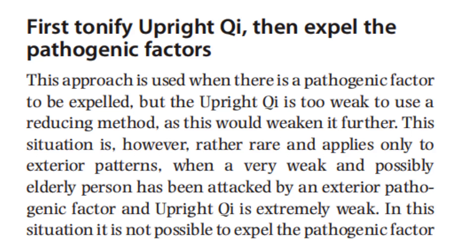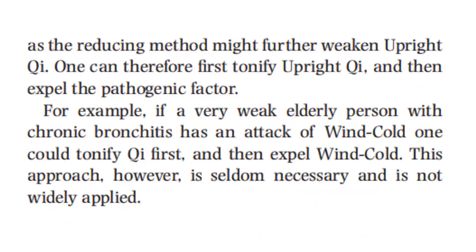When a very weak and possibly elderly person has been attacked by an exterior pathogenic factor and the upright chi is extremely weak, it is not possible to expel the pathogenic factor, as the reducing method might further weaken upright chi. One can therefore first tonify upright chi and then expel the pathogenic factor. For example, if a very weak elderly person with chronic bronchitis has an attack of wind cold, one could tonify chi first and then expel wind cold. This approach, however, is seldom necessary and is not widely applied.